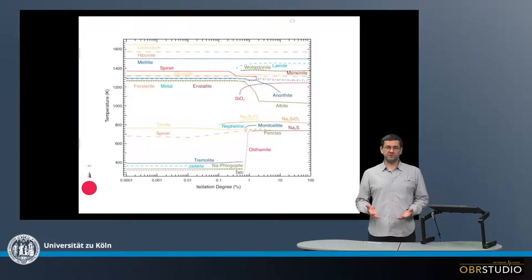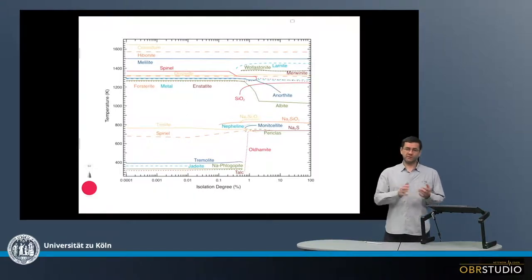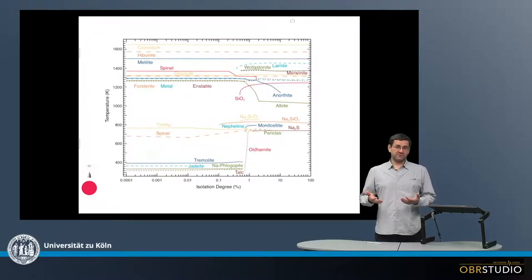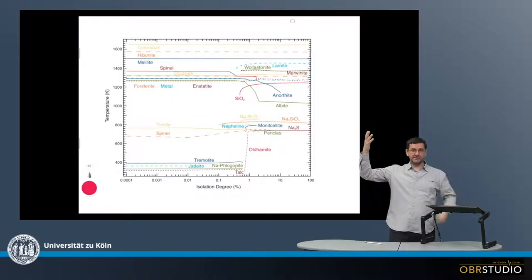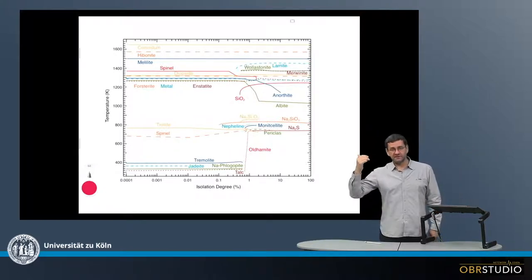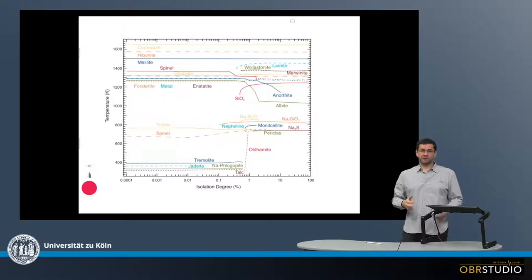It is generally assumed that early in the solar system and close to the sun, almost all of the material or even all of the material in the protoplanetary disk was completely evaporated and in the gas phase. Now this then started to cool down and minerals, solids, began to condense from this gas phase.